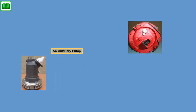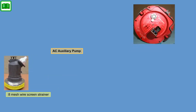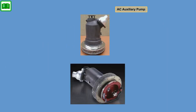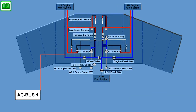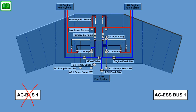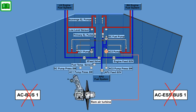The inlet is equipped with an 8-mesh wire screen strainer to avoid ingestion of foreign objects. The pump is a cartridge and canister-type design that allows removal of the pumping element without entering or draining the tank. AC bus 1 powers the left AC auxiliary pump, and AC essential bus powers the right-hand AC auxiliary pump. In case of an electrical emergency, the right-hand AC auxiliary pump will be supplied from the Ram Air Turbine.